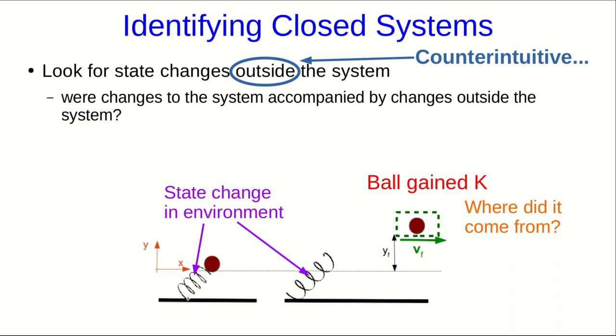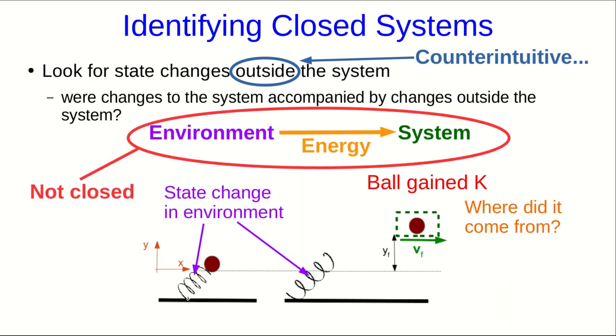Well, there was a state change in the environment. That tells us that the environment's energy changed, and so a perfectly reasonable explanation for where the kinetic energy of the ball came from is that the environment lost energy, that energy was given to the system. And so, since energy moved from the environment to the system, this is not a closed system.